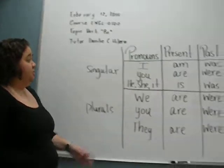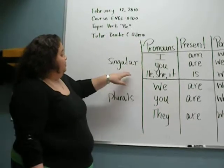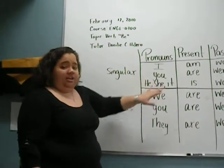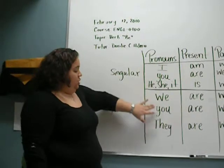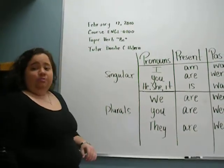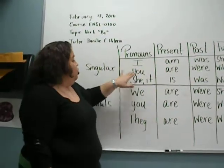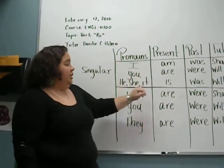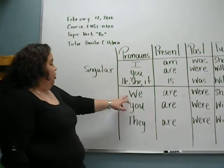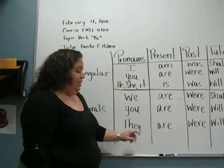The verb be is conjugated with the pronouns in singular and in plural. The pronouns will be I, you, he, she, it, and for plurals, we, you, and they. When we're speaking in the present tense, we might say: I am, you are, he, she, it is. In plural, we might work with: we are, you are, and they are.